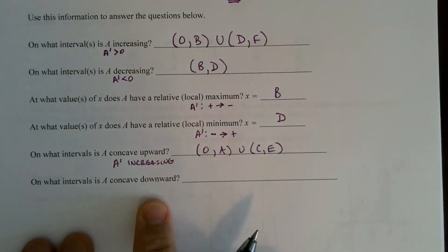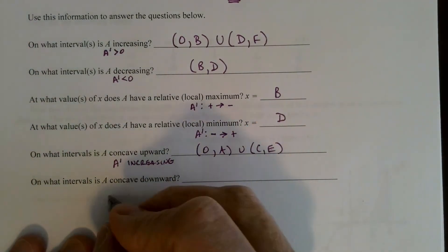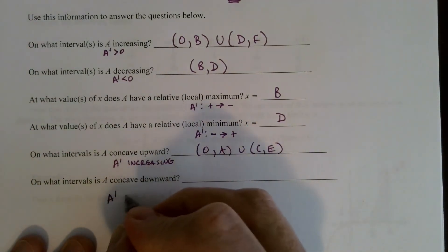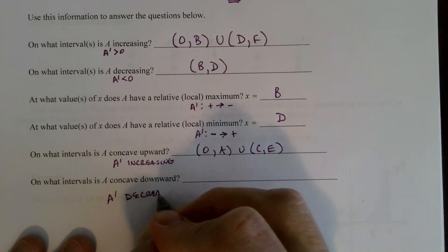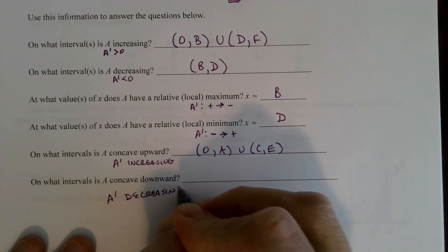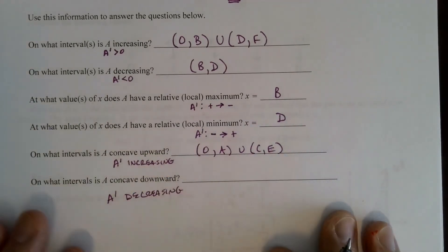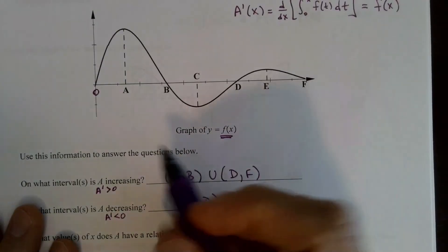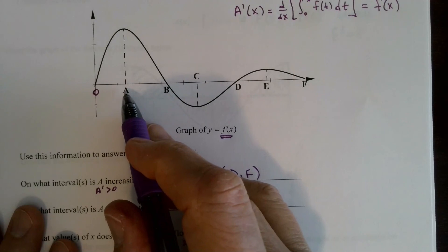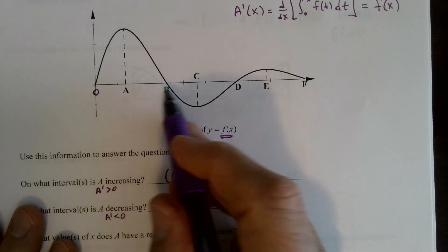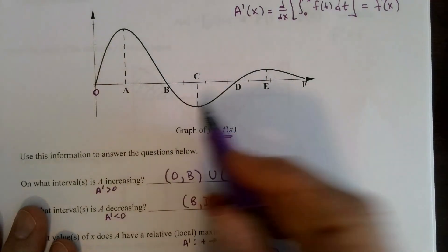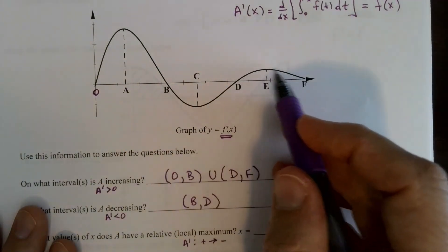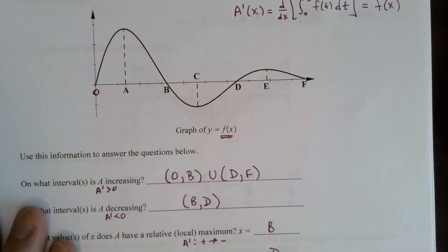On what intervals is A concave downward? That's where A prime — which is f — is decreasing. That's from A to C, and then from E to F.